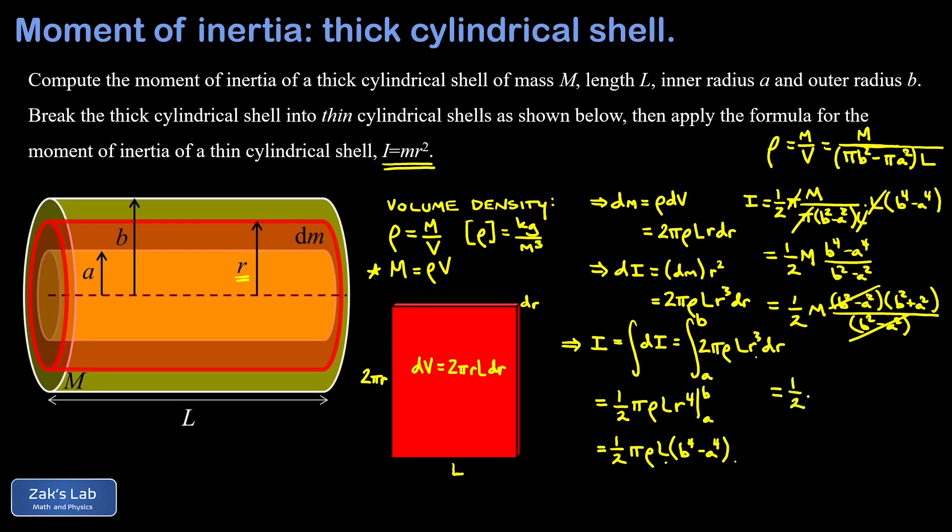We arrive at the moment of inertia formula for a thick cylindrical shell: that's one-half M times the quantity a² plus b². And we're done.